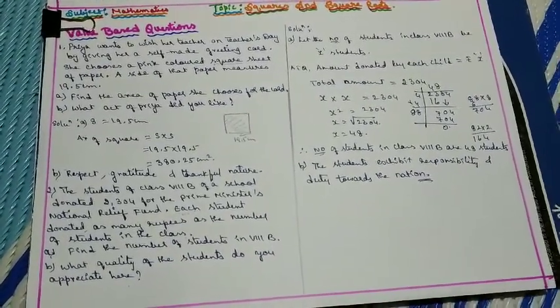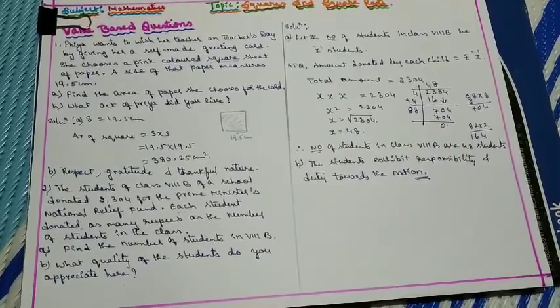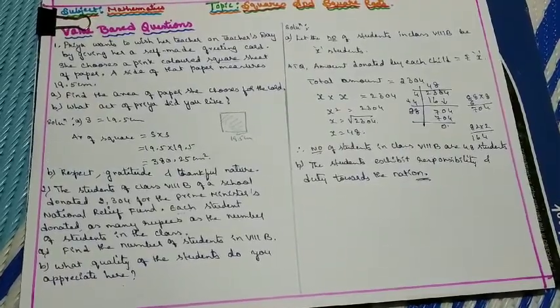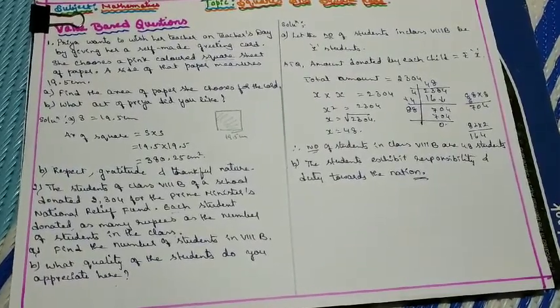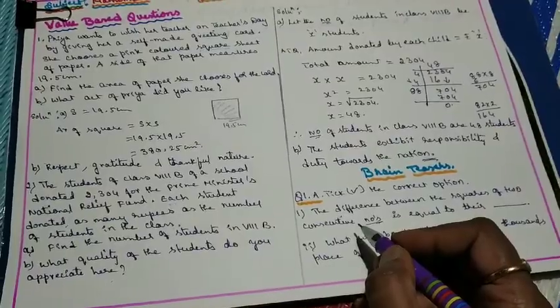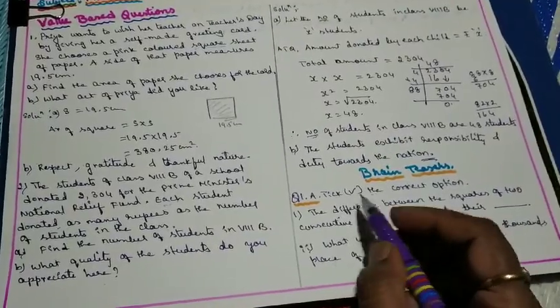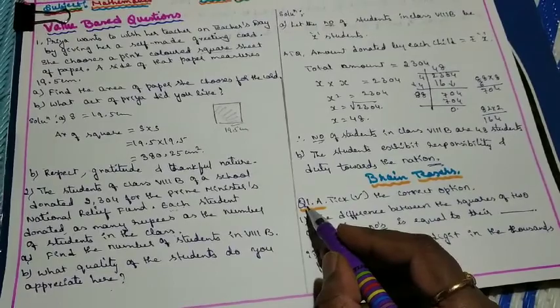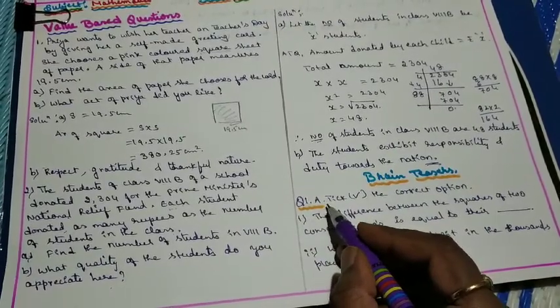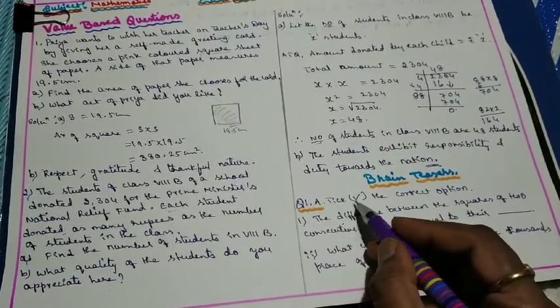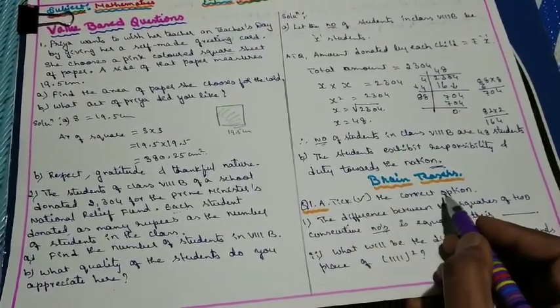This completes the value-based questions. Now let me move to brain teasers. Section A: tick the correct option.